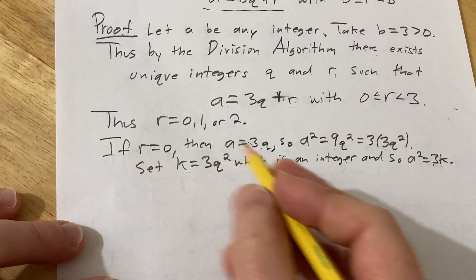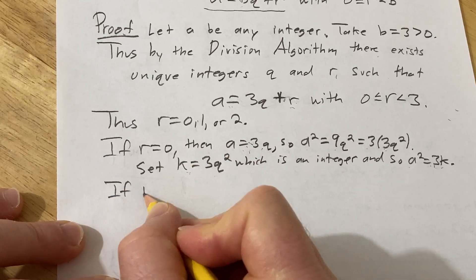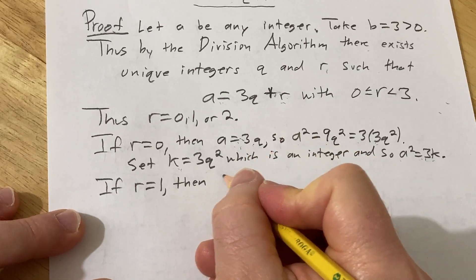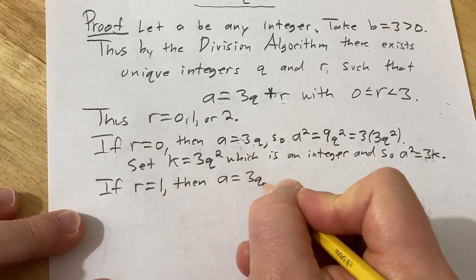Now we'll do r equals 1. If r equals 1 then a is equal to 3q plus 1.